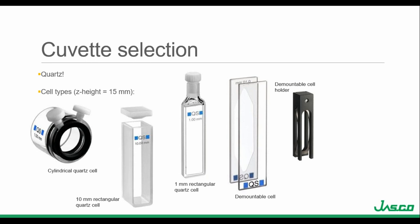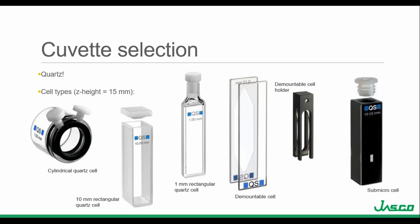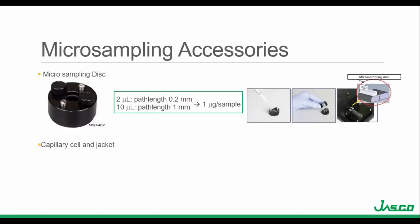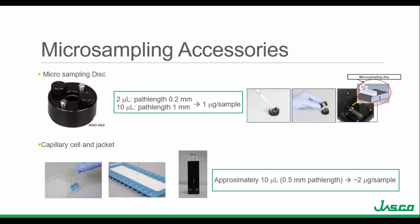The demountable cells also require a demountable cell holder because the two cell plates are sandwiched together and secured in place. It's also important to verify the path length of the demountable cells after loading to ensure the correct path length, especially if calculating molar ellipticity or mean residue molar ellipticity where concentration and path length corrections are needed. Rectangular micro and submicro cells are also available for small volume measurements in a variety of volumes and path lengths. These cells have smaller apertures, so it's important to use a black mask cell if the cell window is smaller than the instrument beam.